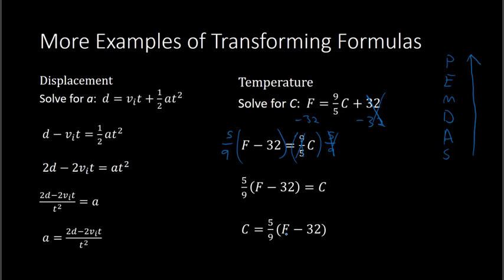So c equals 5-ninths times (F minus 32). If we're trying to find the degrees in Celsius, I take 5-ninths and multiply by the degrees in Fahrenheit minus 32 degrees.